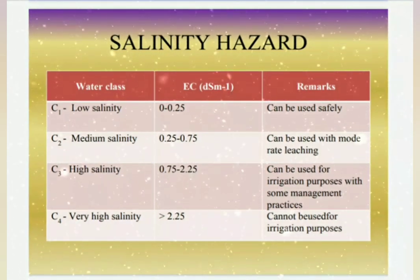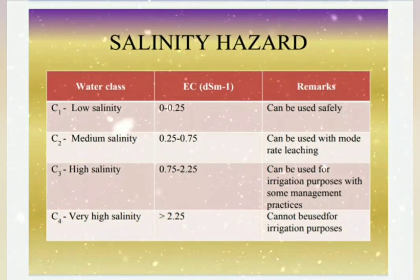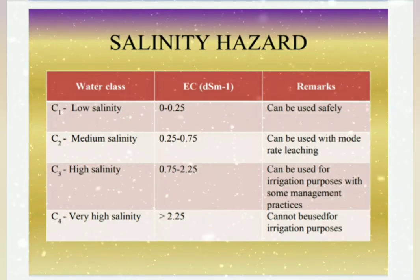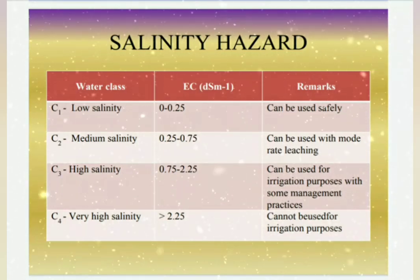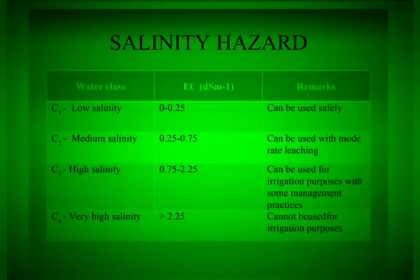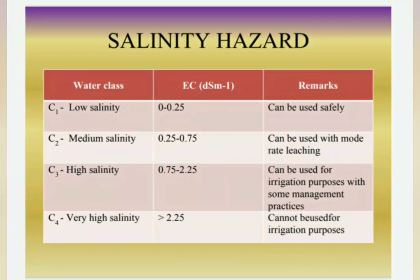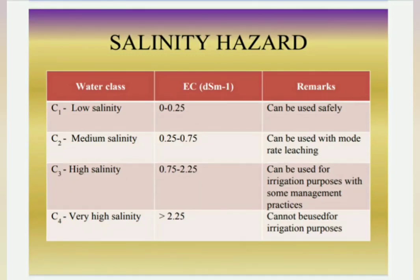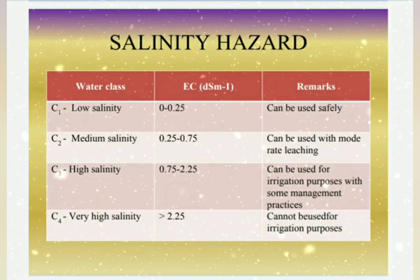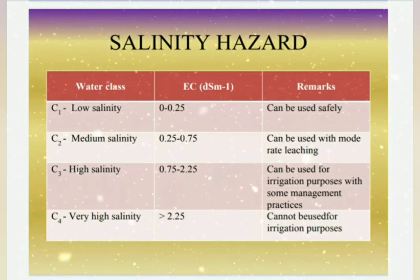Salinity hazard. Salinity is the accumulation of salts in irrigation water. It can be classified in terms of electrical conductivity and expressed as deci-siemens per meter. There are four classes of salinity: C1, C2, C3, and C4. The classes C1 and C2 are suitable for irrigation purpose, while C3 and C4 are not suitable for irrigation purpose.